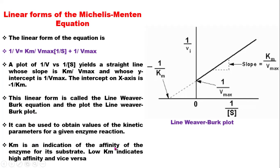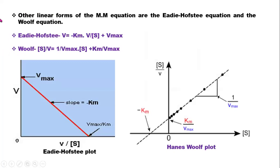The Lineweaver-Burk plot can be used to obtain values of kinetic parameters for enzyme reactions. Km is an indication of the affinity of the enzyme for its substrate. Low Km indicates high affinity, while high Km means low affinity towards that substrate.